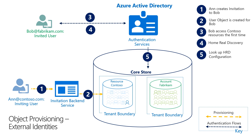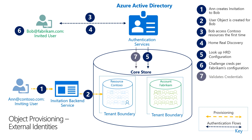With this information, the authentication service moves to step five to figure out how to authenticate Bob. The credential challenge kicks in at step six depending upon the configuration of Fabricam — for example, if they're using ADFS or password hash sync. In step six, Bob enters the credential per the configuration. In step seven, Azure AD validates the credentials where the user account is coming from, in this case the account tenant Fabricam. Since the authentication validated that Bob is in Contoso and is in a pending redemption state, the authentication service redirects the user to the invitation backend service in step eight. That allows Bob to consent to sharing information with Contoso through a user experience.